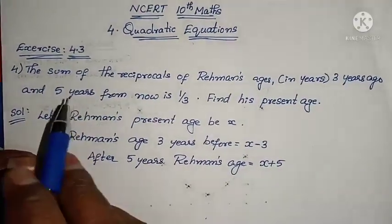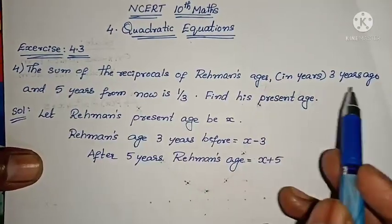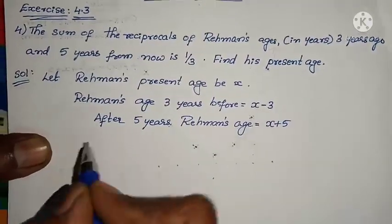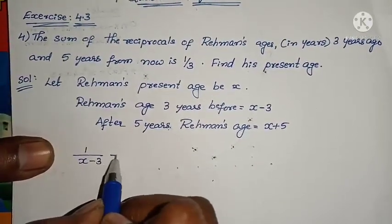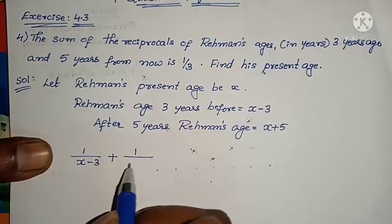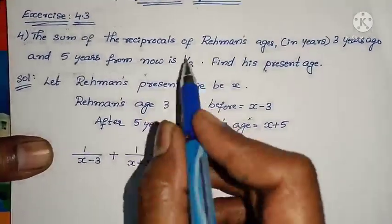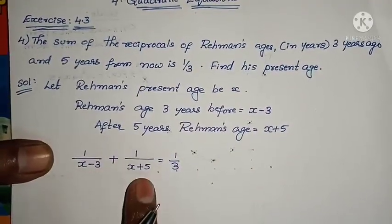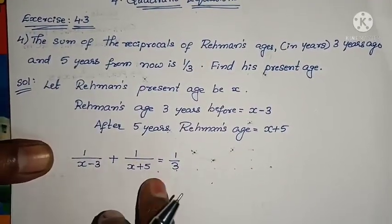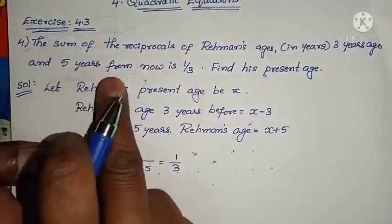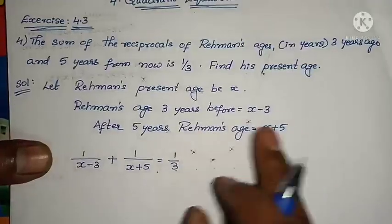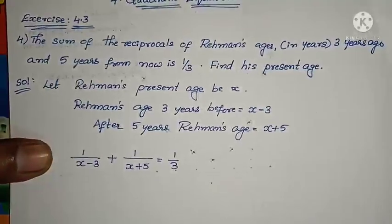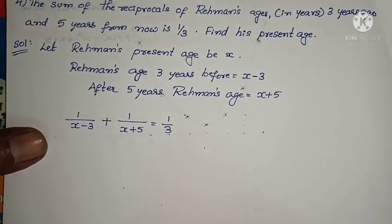What they said in the question: the sum of the reciprocals of Rahman's age 3 years ago and 5 years from now. The sum of the reciprocals means 1 by (X minus 3) plus 1 by (X plus 5) equals 1/3. Reciprocal means 1 by. 3 years ago is X minus 3, 5 years from now is X plus 5. That value is 1/3. We have to find X.